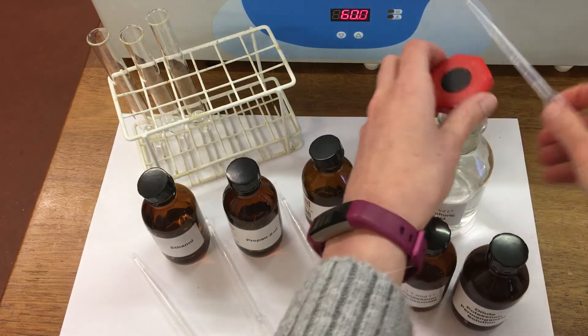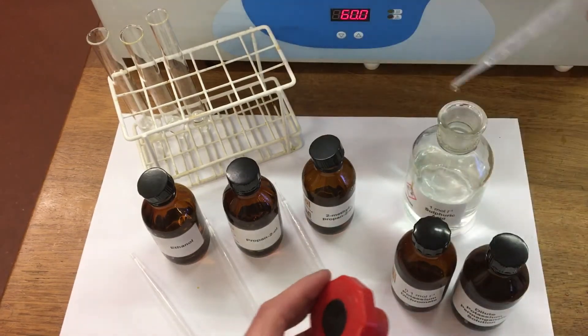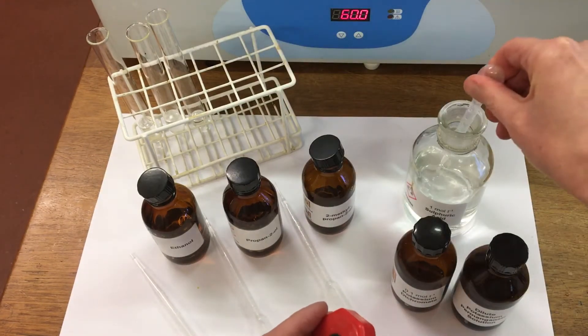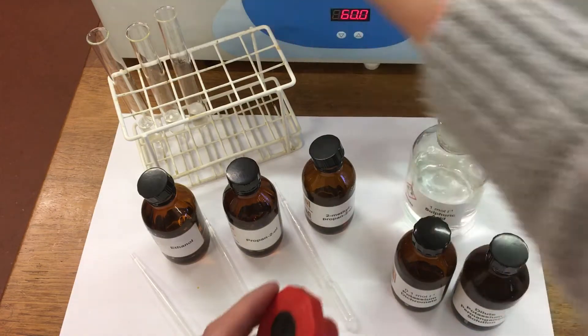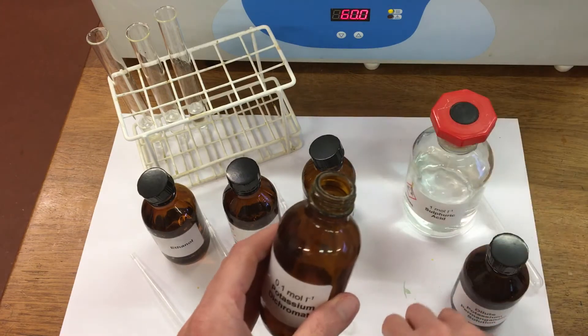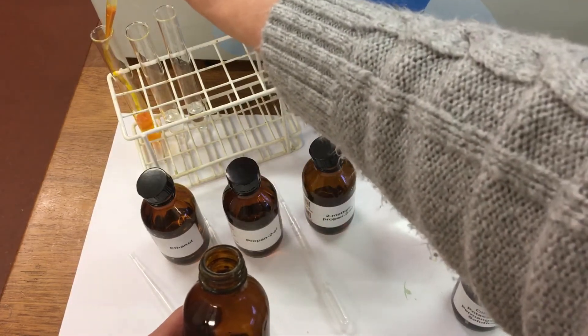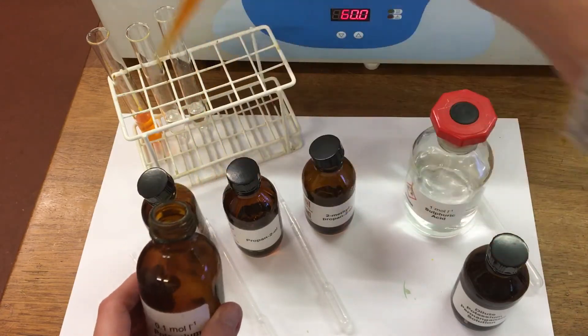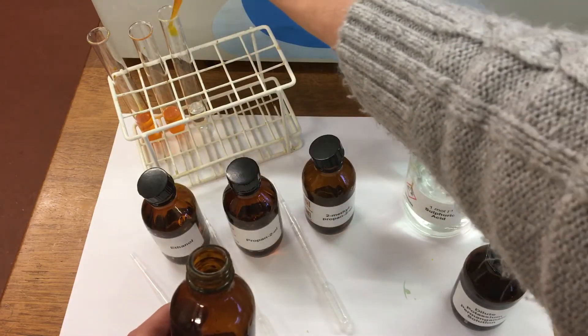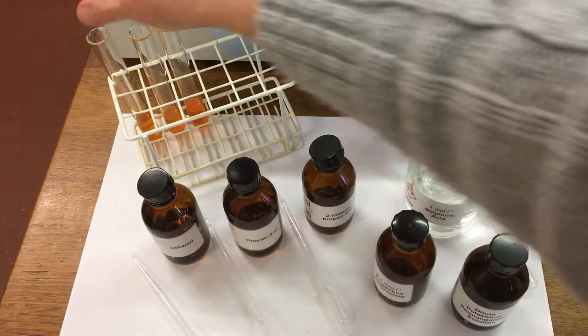I'm then going to pop some sulfuric acid into each test tube. And then our first oxidizing agent is potassium dichromate. I'm then going to mix each test tube.